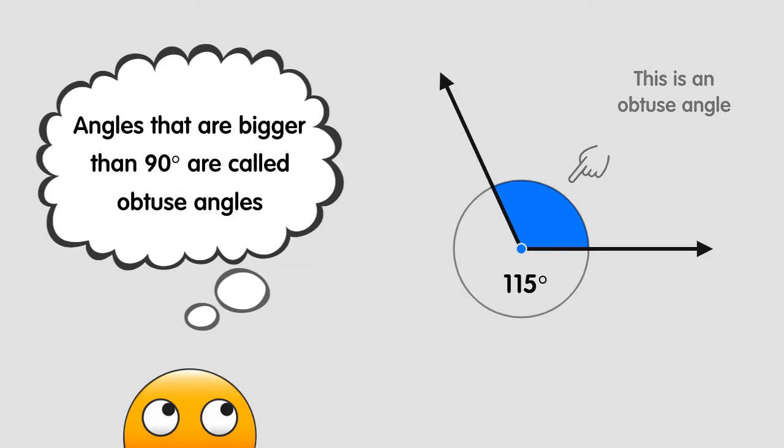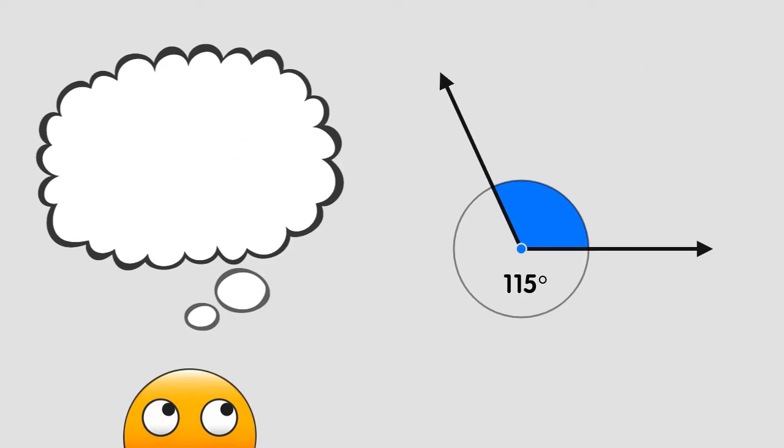Angles that are greater than right angles are called obtuse angles. An obtuse angle can measure between 91 and 179 degrees.